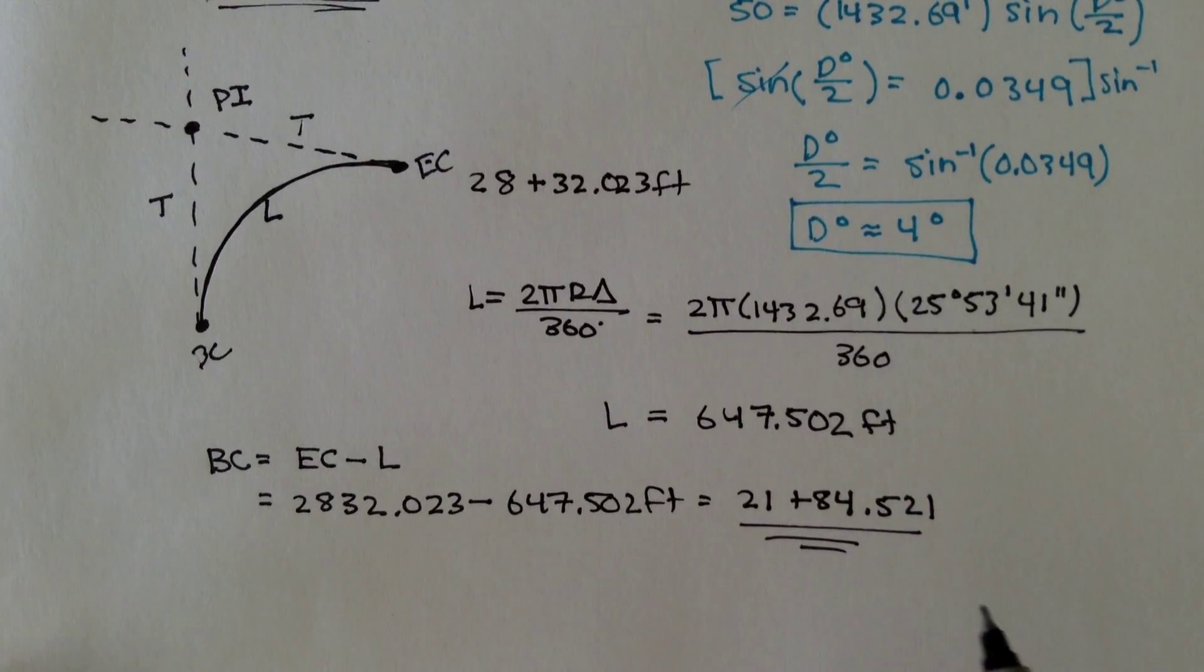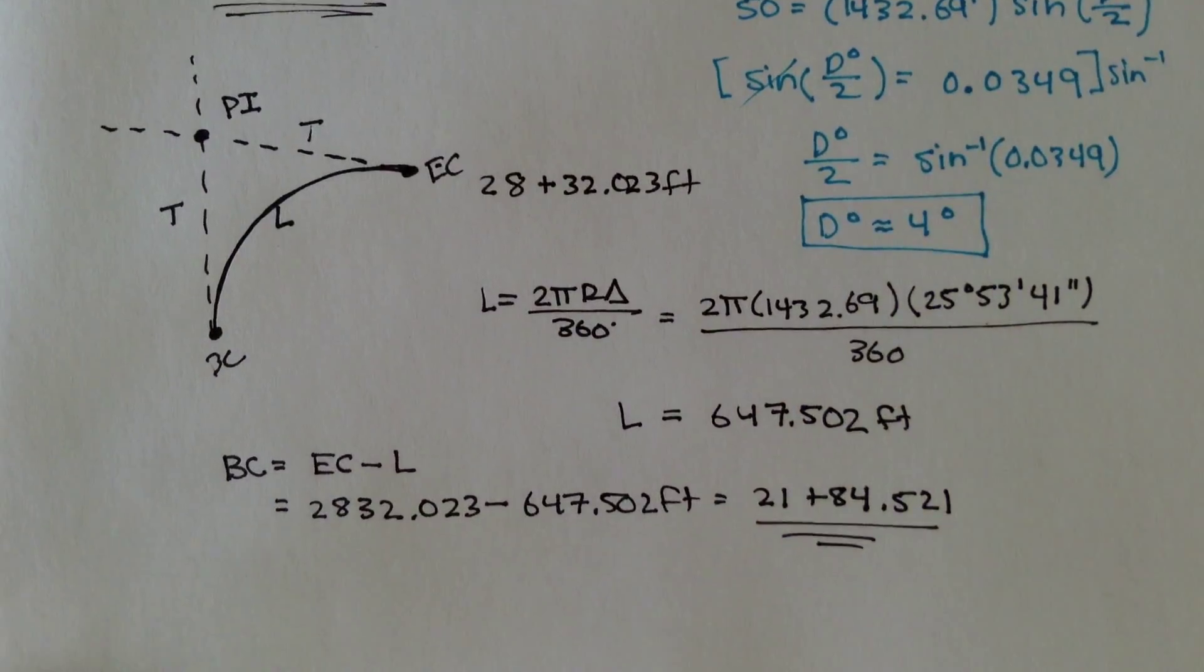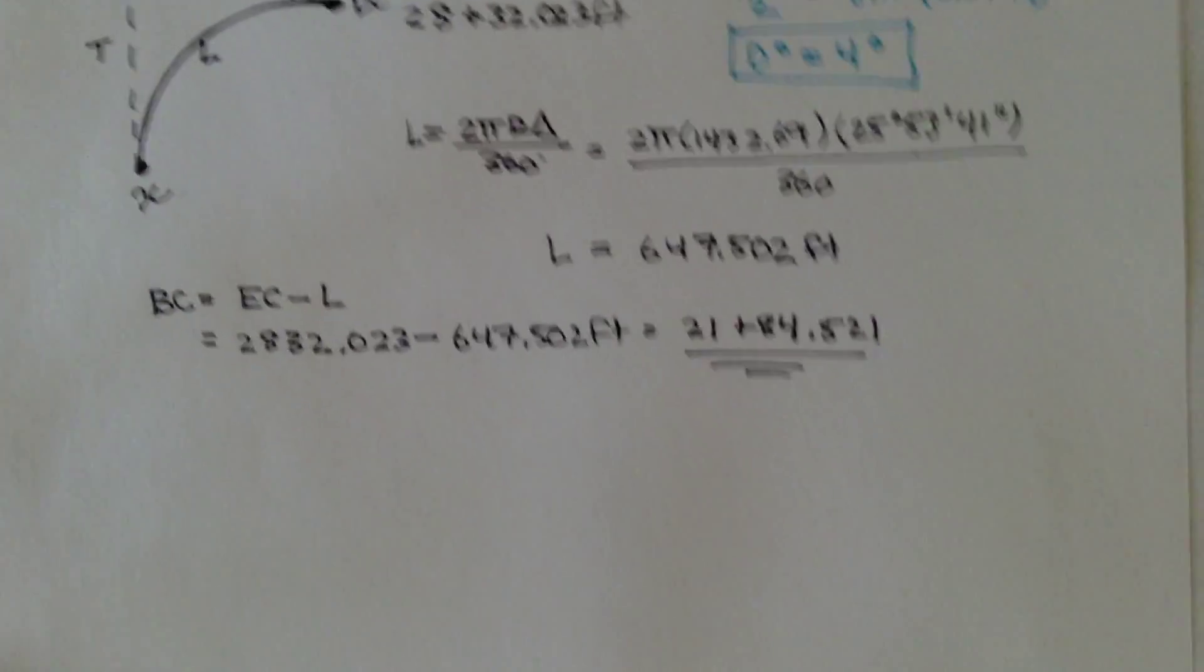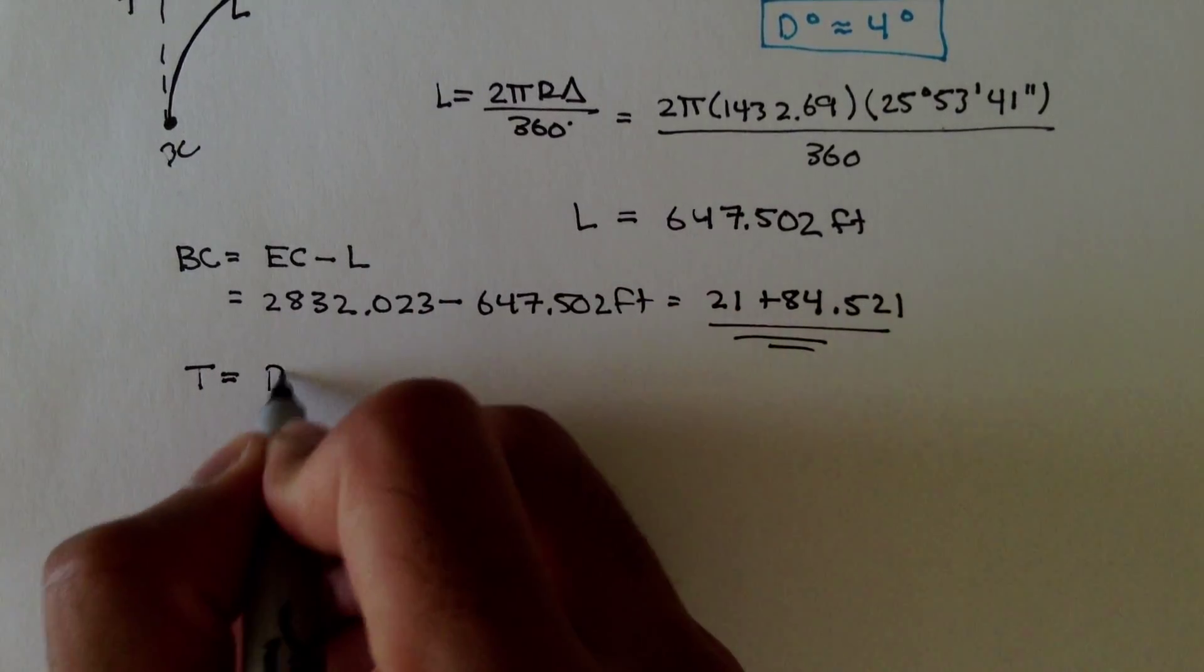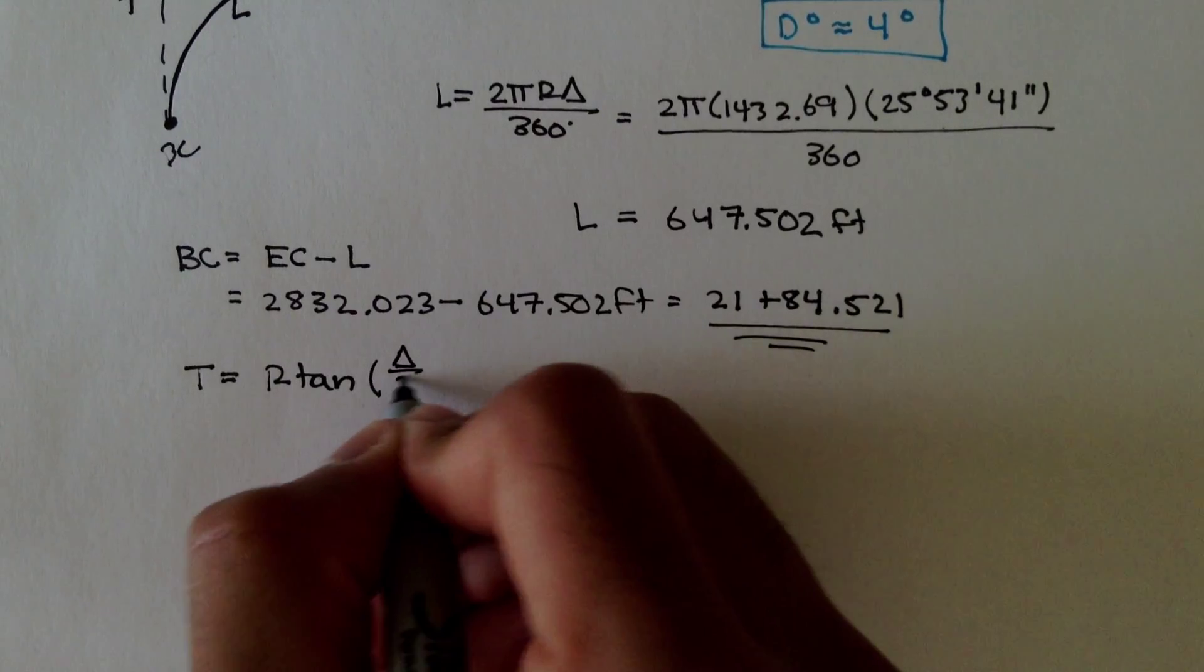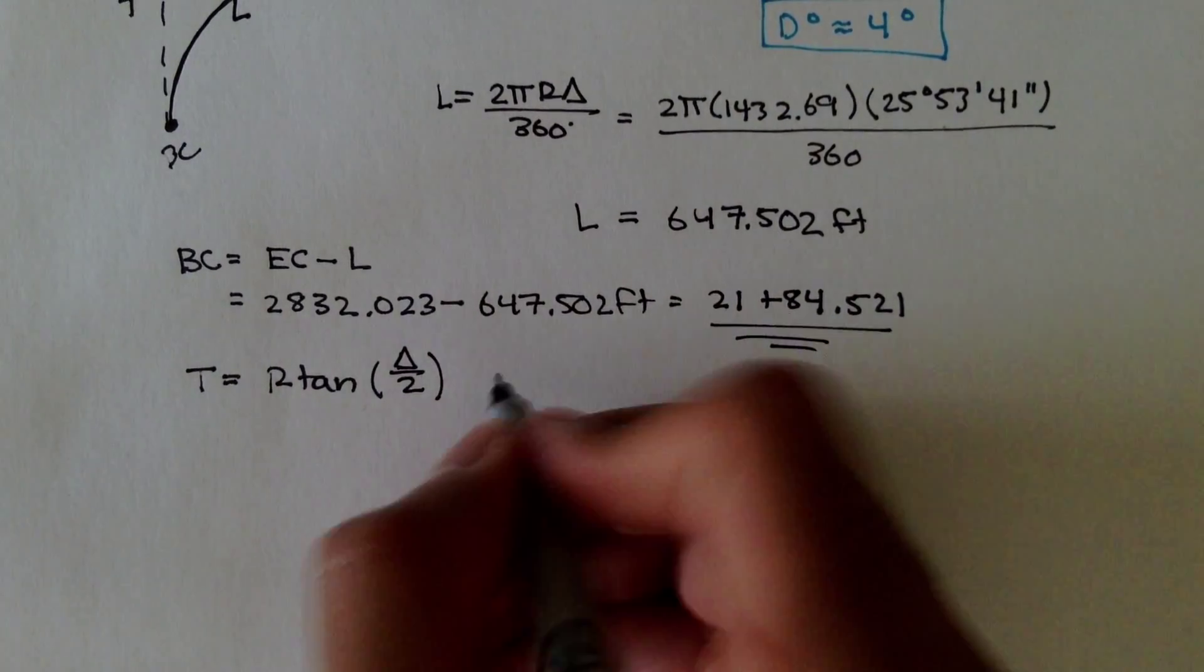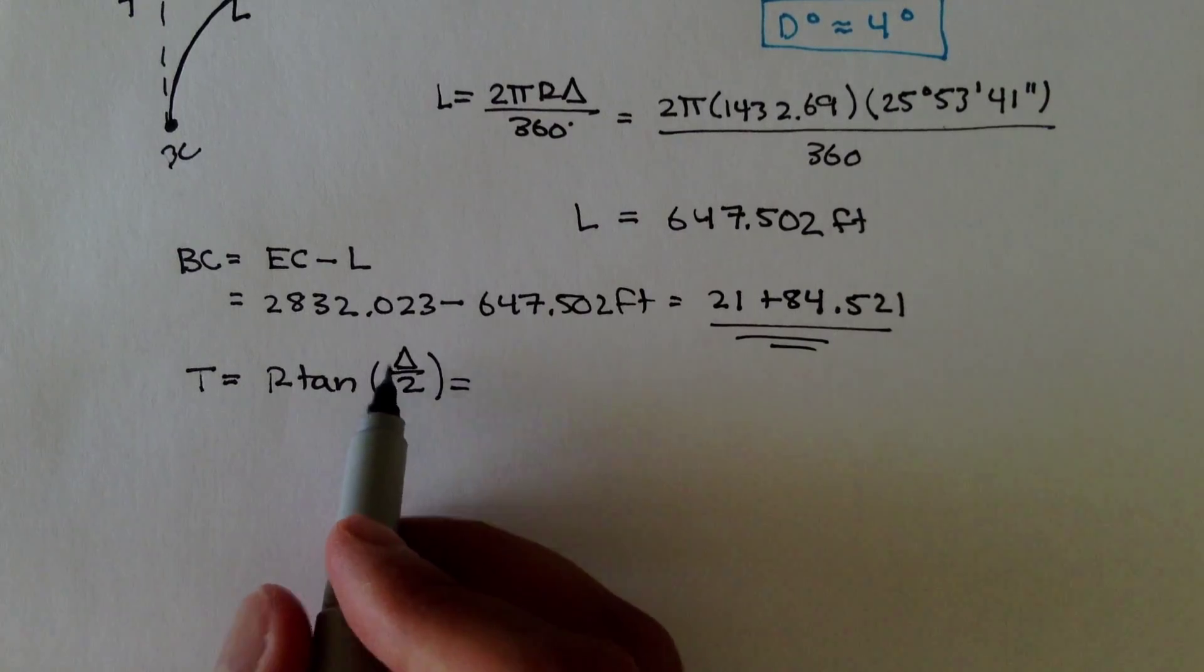Now, to the beginning of curve, we need to add the distance t to figure out what the station of the PI is. Now, we don't know what t is, but we have a formula for that. t is equal to r tan of delta over 2.